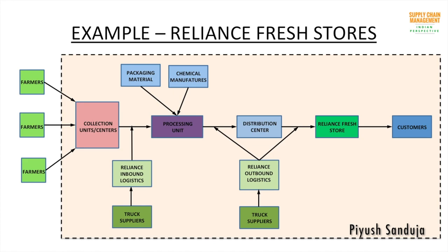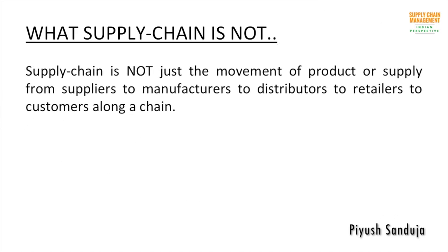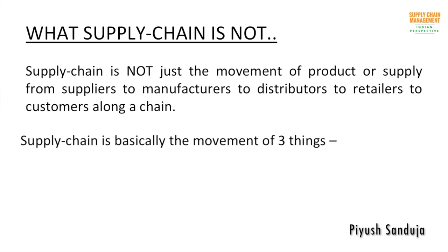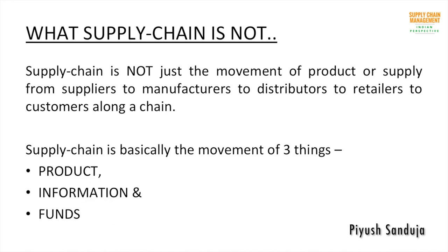Now let's talk about what supply chain is not. Till now we said that in a supply chain a product moves from one stage to another. But supply chain is not just the movement of product or supply from one stage to another. Supply chain is basically the movement of three things: number one, product; number two, information; and number three, funds.